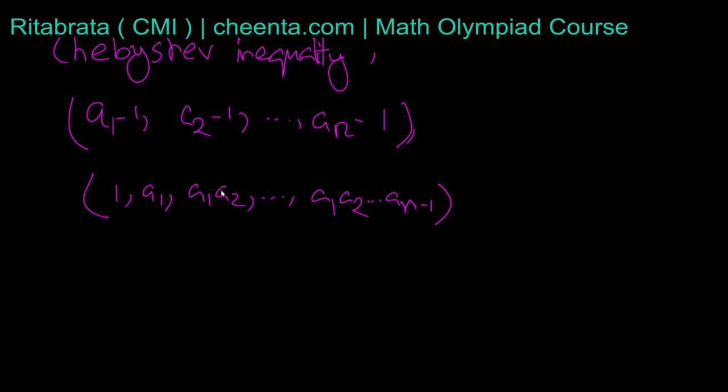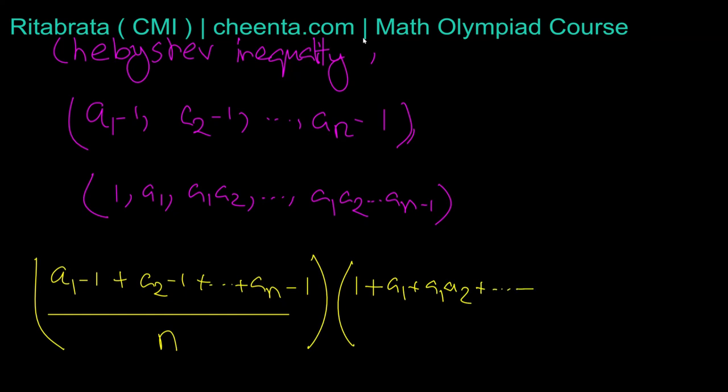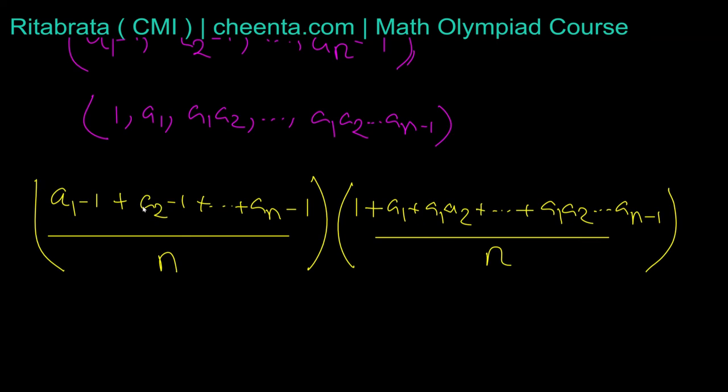Applying Chebyshev inequality on these two sequences, what we get? [(a₁ - 1) + (a₂ - 1) + ... + (aₙ - 1)]/n times [1 + a₁ + a₁a₂ + ... + a₁a₂...aₙ₋₁]/n is less than or equal to the corresponding product sequence: [a₁ + a₁a₂ + ... + a₁a₂...aₙ₋₁ + a₁a₂...aₙ₋₁(aₙ - 1)]/n.